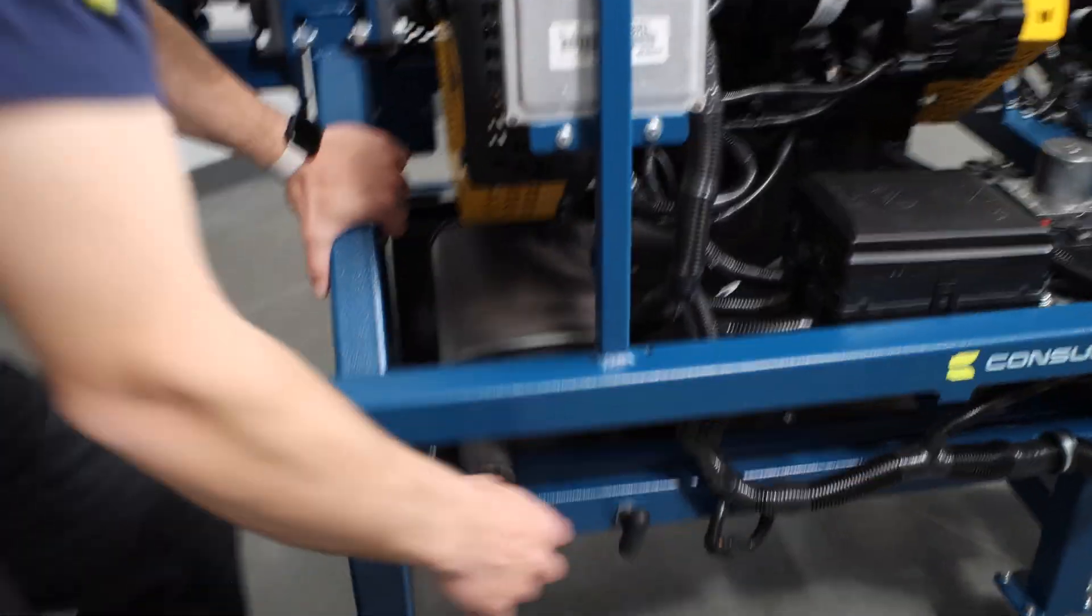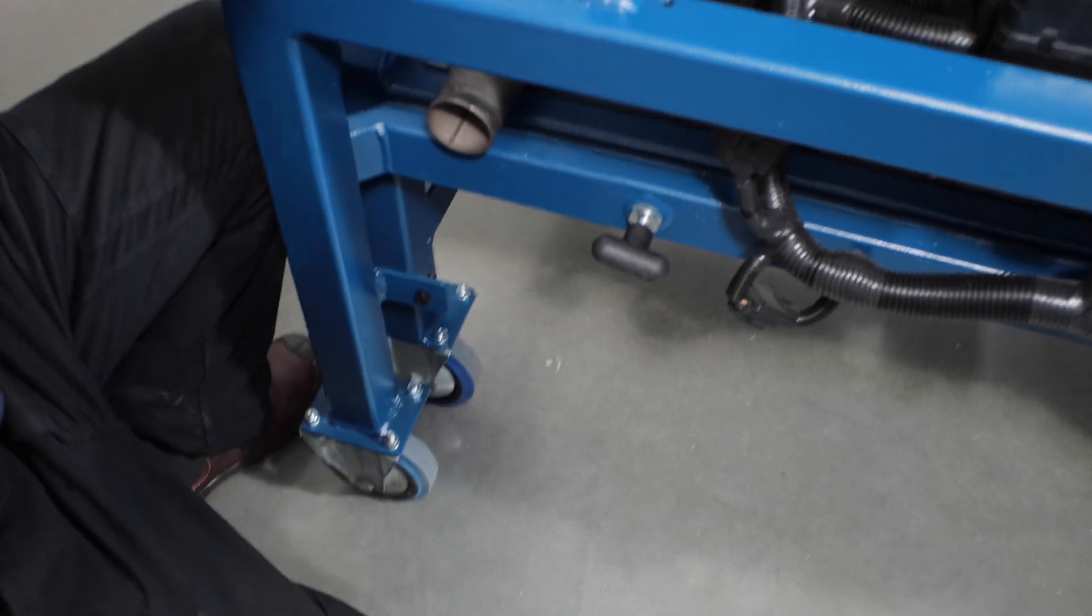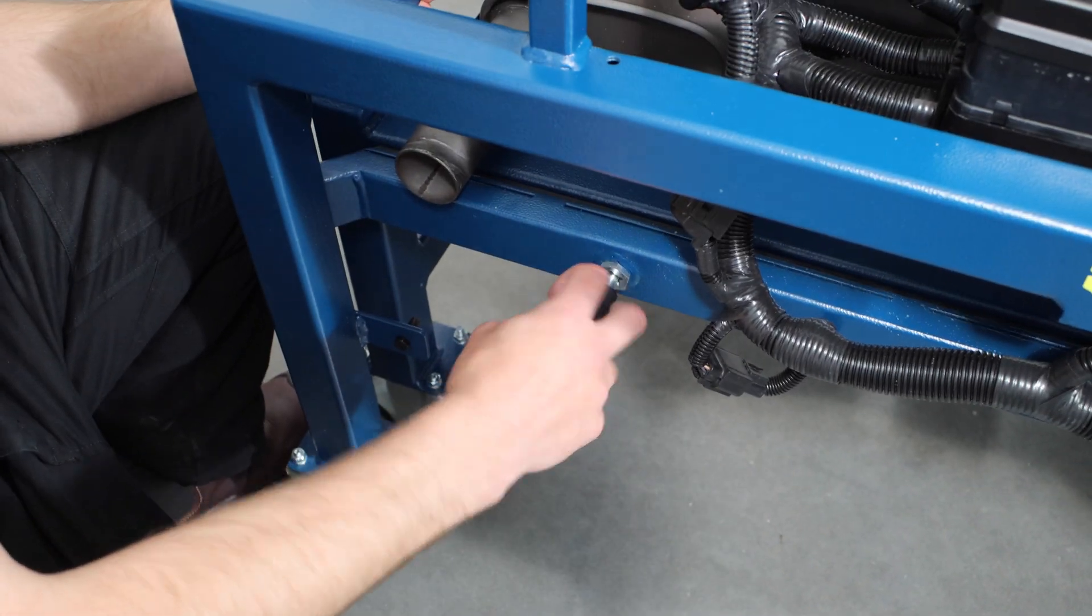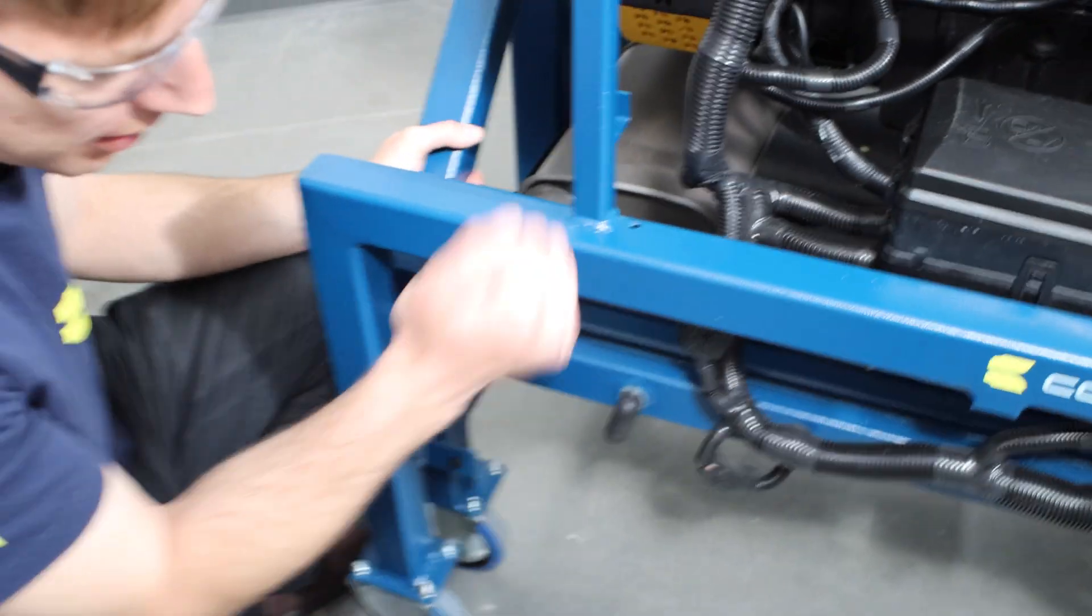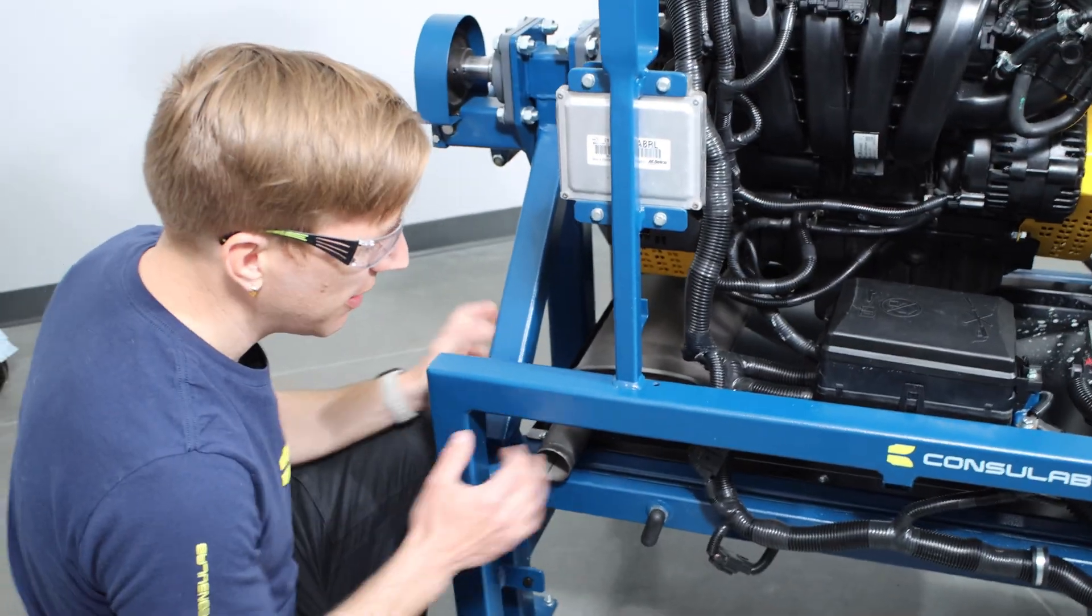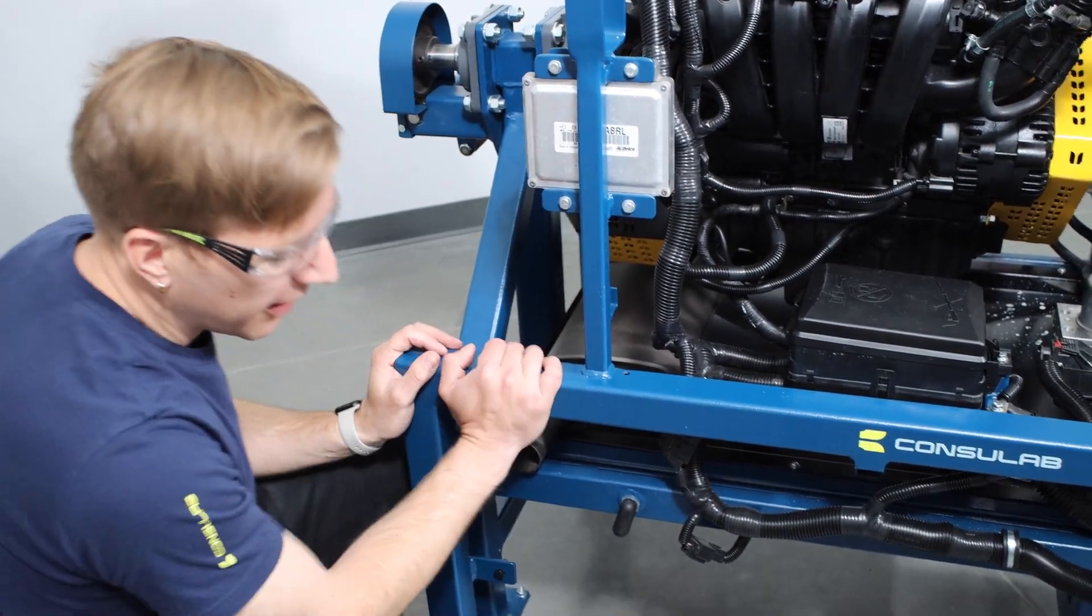To connect the two together we have these pins. Quarter turn and you're locked in. You've got a pin here, pin on the other side. Once the two are pinned together, tolerances are nice and tight, there's nothing wobbling around. You can roll this around your shop as one unit and you can leave it together.